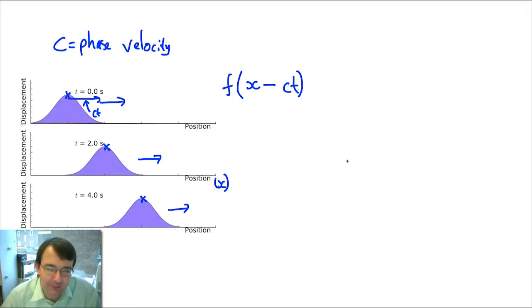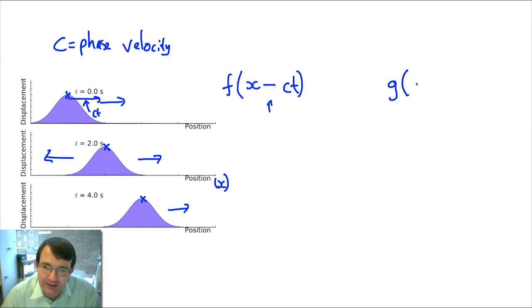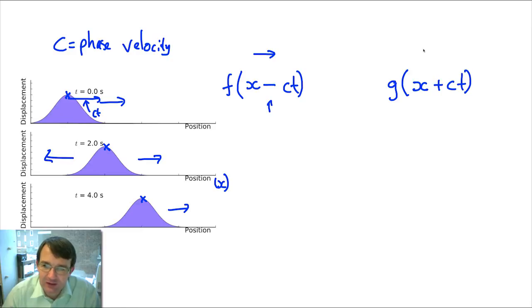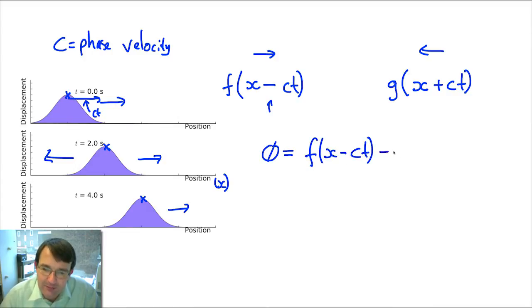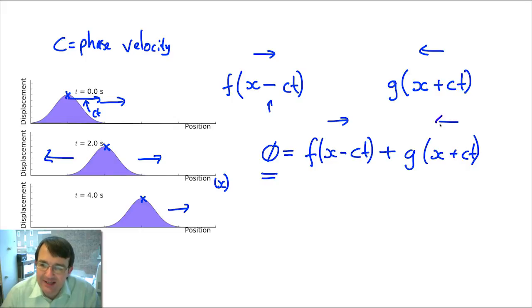But that's not the only possibility. Suppose I have a wave moving in the negative direction — then I don't want to subtract ct, I want to add ct. So my function, let's call it g, will be equal to x plus ct. Whereas f(x − ct) corresponds to a wave moving in the positive x-direction, g(x + ct) corresponds to a wave moving in the negative x-direction. So my total displacement from equilibrium, let's call it phi, is going to be f of (x minus ct) plus g of (x plus ct), which is a combination of my positive-going and negative-going waves.